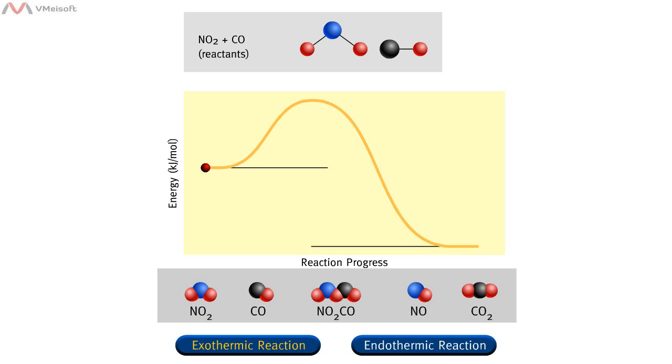Click on each of the regions — A, B, C, or D — as they appear, to view the molecular changes that occur during each stage of this reaction.